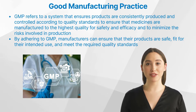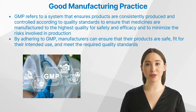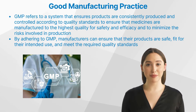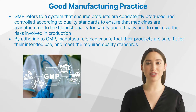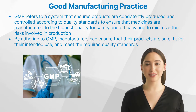What is the definition of good manufacturing practice? Good manufacturing practice refers to a system that ensures products are consistently produced and controlled according to quality standards. In the context of the pharmaceutical industry, GMP is critical in ensuring that medicines are manufactured to the highest quality for safety and efficacy. The role of GMP in pharmaceutical manufacturing is to minimize the risks involved in production that cannot be eliminated through testing the final product.